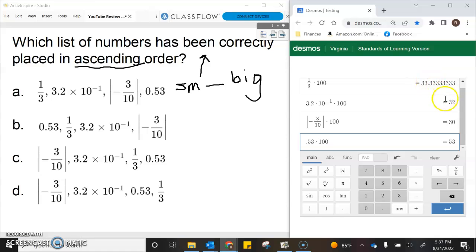So we have 33 percent, 32 percent, 30 percent, and 53 percent. We're ascending, so we're going small to big.